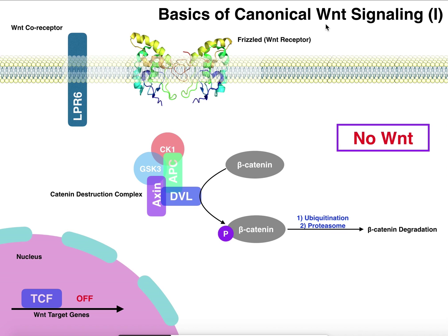We really have to talk about this first in the case where there's no Wnt present. Wnt's receptor is called Frizzled — kind of a strange name, but its origin is Drosophila, where people tend to name things very strangely. This is the Wnt receptor, also called Frizzled, and it sits in the plasma membrane of the cell. There's also a Wnt co-receptor called LRP6. If Wnt is going to bind, it's actually going to bind more or less to both of these, and they're going to come into closer proximity. But there's no Wnt here.